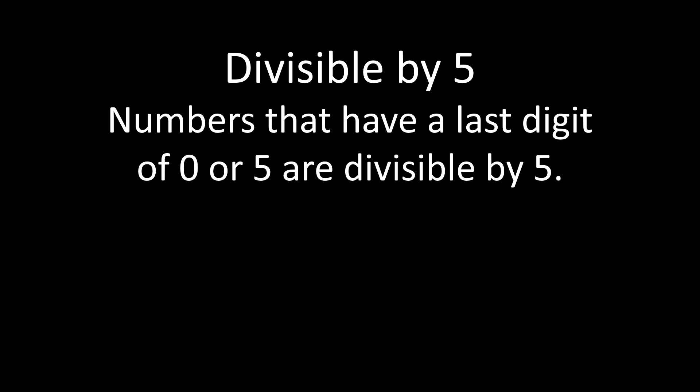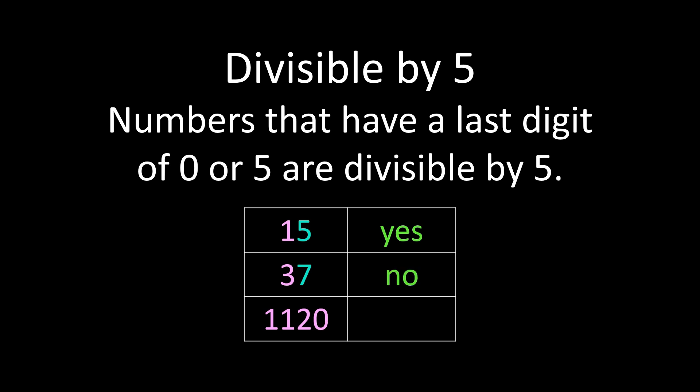When considering if a number is divisible by 5, you're looking at the last digit. Numbers that have a last digit of 0 or 5 are divisible by 5. So if we see 15, the last digit in 15 is 5, so 15 is divisible by 5. With 37, our final digit is a 7, so 37 is not divisible by 5. And for 1,120, our last digit is 0, so 1,120 is divisible by 5.